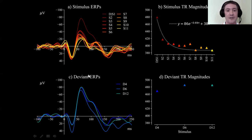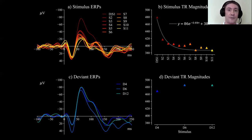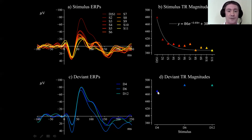In contrast, the deviant ERPs were not substantially affected by the number of preceding standards. D4 represents a deviant after tone trains of length 3, D6 after length 5, and D12 after 11 repetitions. Based on the triphasic response magnitude, there's not a substantial difference between these three evoked responses — they're very similar overall.